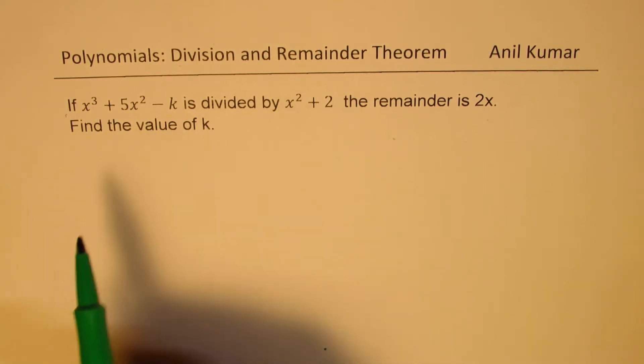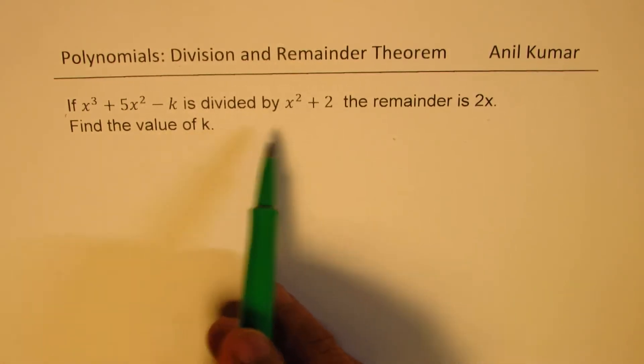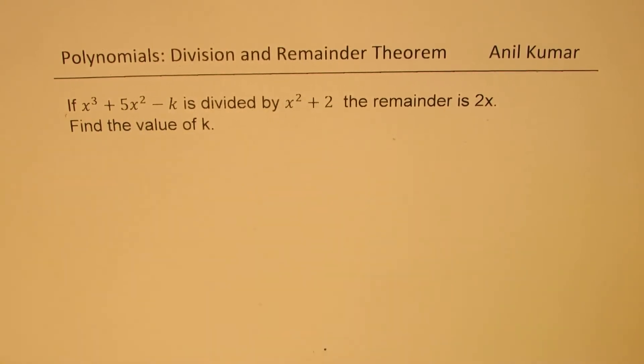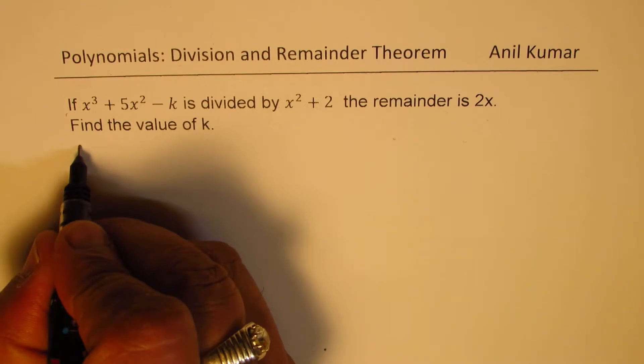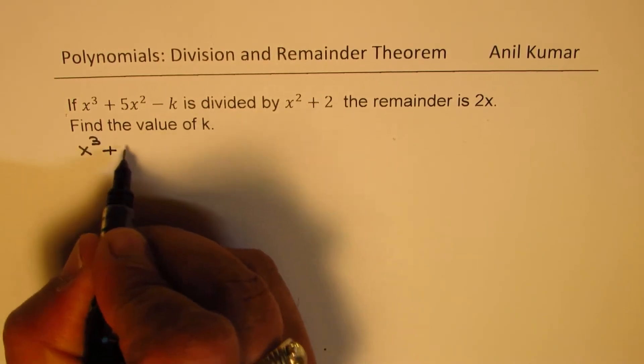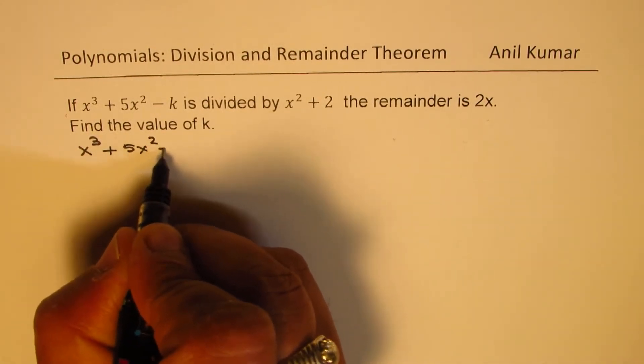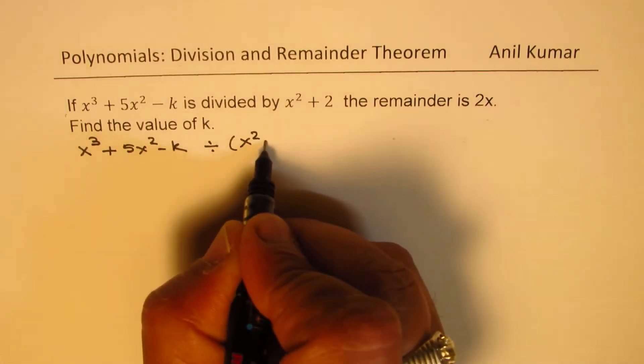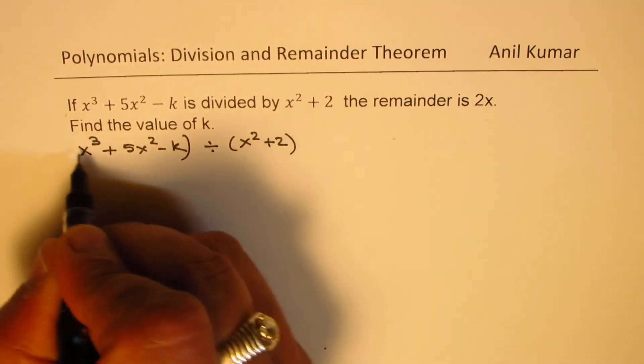Now, what we could perform here is long division to find the solution. So we need to divide x cubed plus 5x squared minus k by x squared plus 2. So that is the strategy.